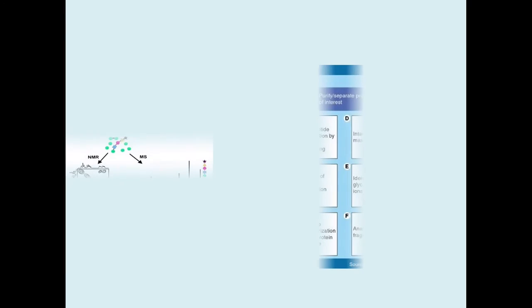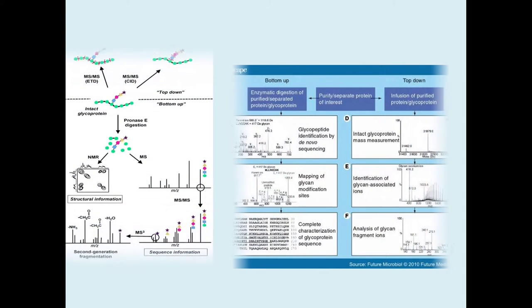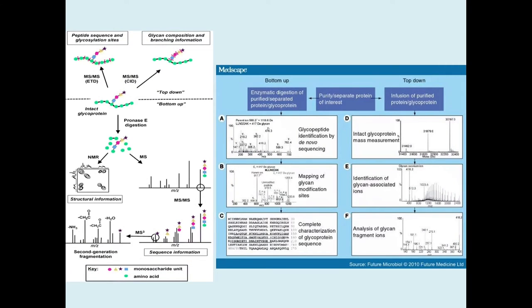The information about glycan structure can be derived by two MS approaches called top-down and bottom-up. In a top-down approach, an intact glycoprotein is analyzed directly using electron transfer dissociation (ETD) or collision-induced dissociation (CID) mass spectrometry techniques. ETD induces backbone fragmentation, resulting in a mass spectrum that reveals information about peptide sequence and glycosylation sites. On the other hand, CID favors the fragmentation of glycosidic bonds, providing information about glycan composition and branching.